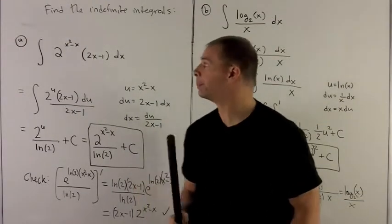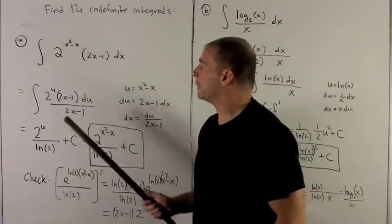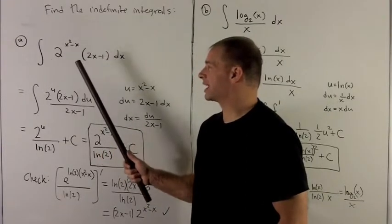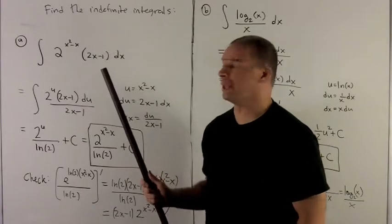Find the indefinite integrals. Our first one, take the indefinite integral of 2 to the x squared minus x times 2x minus 1 dx.